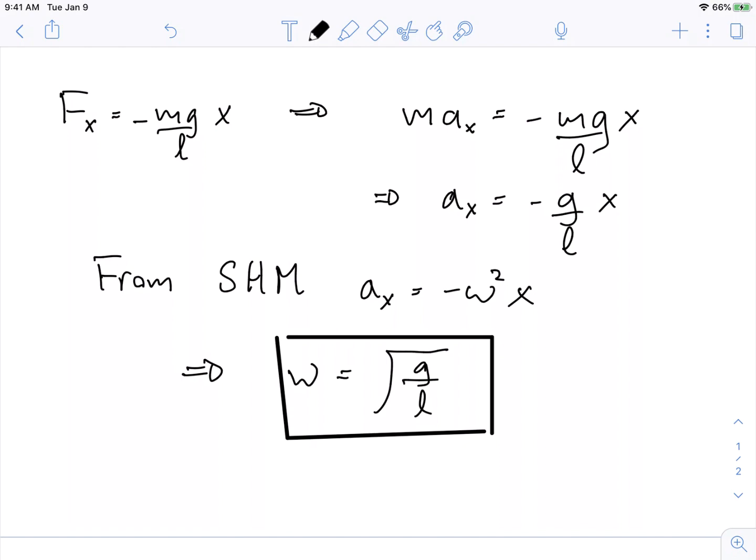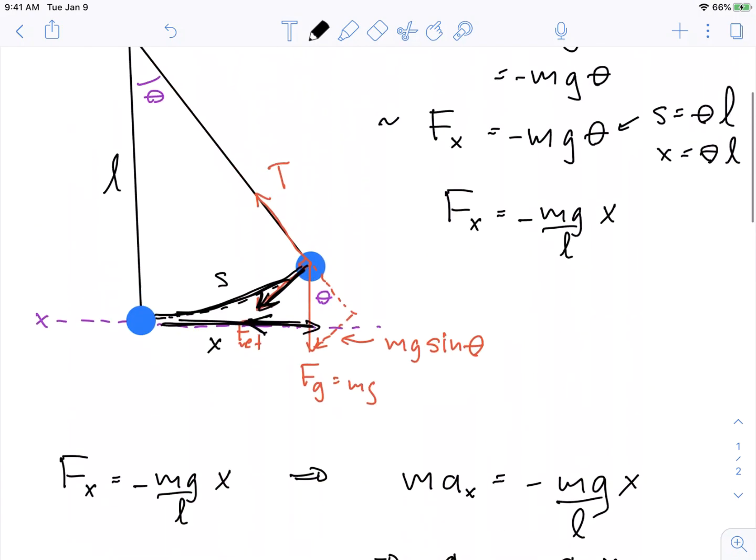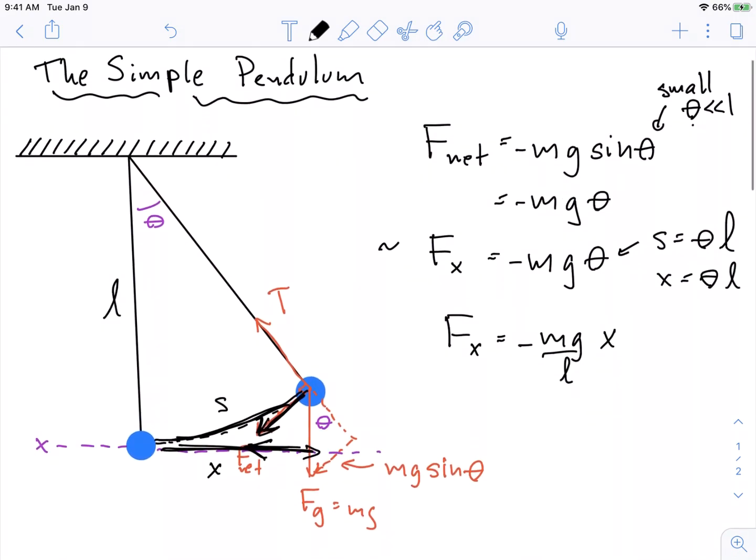But you notice in order to get here, we had to make a bunch of approximations. What were those approximations? We had to assume that it was a small angle. And along with that small angle, we had to assume that the arc motion, s, was actually the same as the horizontal motion, x. The arc motion s is the same as x. And that all of these forces were just happening in the x direction.